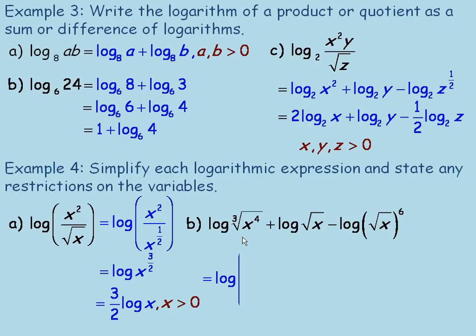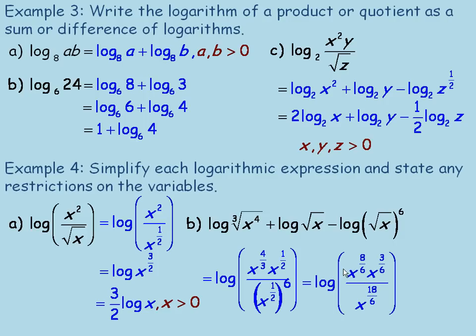For part B, the cube root of x to the fourth means x to the four-thirds. Remember the power it's raised to is the numerator exponent, the root is the denominator. The root of x means x to the power of a half—those are added because we're multiplying these two powers of x. And we're subtracting this log, so we would divide that by the root of x to the sixth, which is x to the power of a half, raised to the sixth. A half times 6—remember power over power, you multiply the exponent—so that's 3. The exponent here is actually 3 when we simplify this.